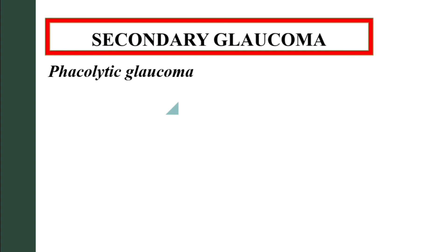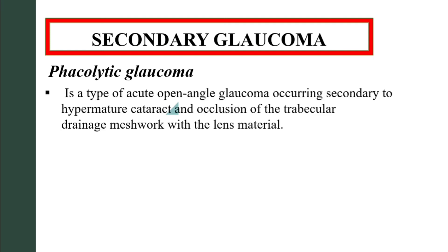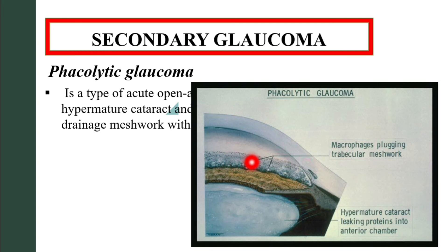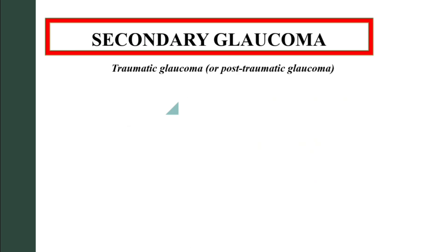Phacolytic glaucoma is a type of acute open-angle glaucoma occurring secondary to hypermature — and sometimes mature, but in rare cases immature — cataracts, with occlusion of the trabecular drainage meshwork by lens material. Hypermature cataracts are leaking proteins into the anterior chamber, and you can see macrophages plugging the trabecular meshwork, thus causing phacolytic glaucoma.